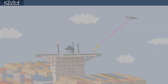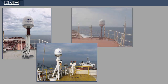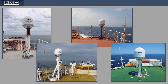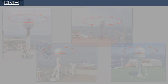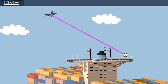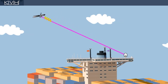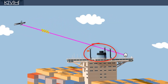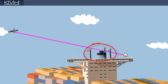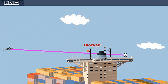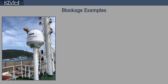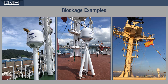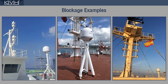Therefore, in an ideal installation, the antenna has an unobstructed view of the sky in all directions. Satellite signals cannot penetrate solid objects. Anything that stands between the antenna and the satellite can potentially block or degrade the signal and interrupt service. Common causes of blockage include masts, antennas, and other structures.